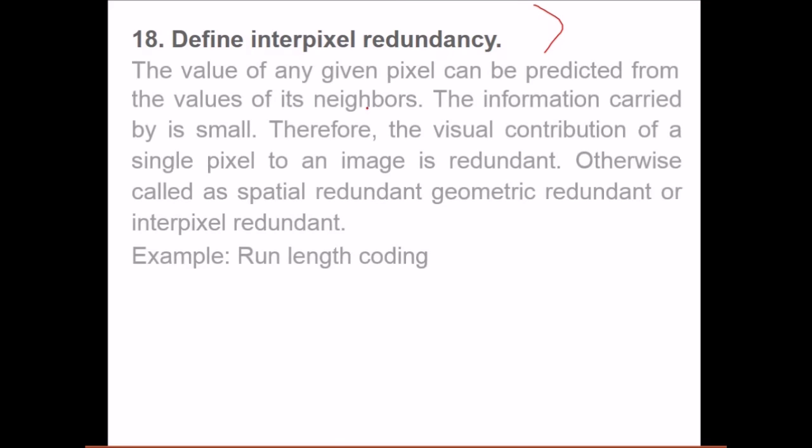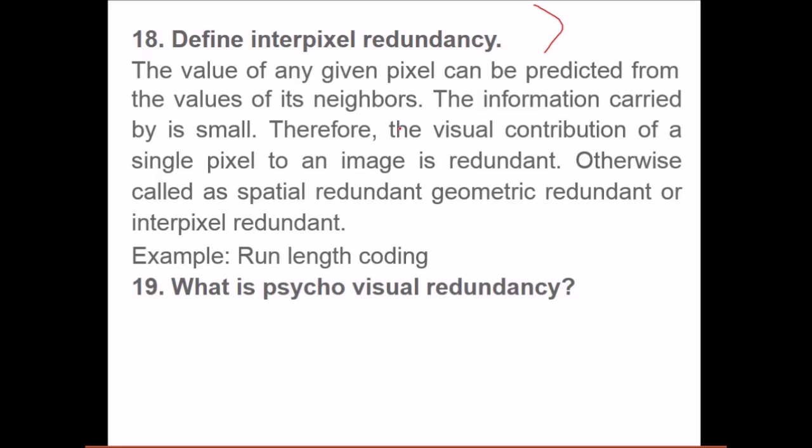Define inter-pixel redundancy. The value of any given pixel can be predicted from the value of its neighbors. Any pixel from neighbor, you can replicate it, you can average it or whatever. Neighbors have similar, somewhat similar values. So the information carried is small. Therefore, the visual contribution of a single pixel to an image is redundant, otherwise called as spatial redundant, geometric redundant, or inter-pixel redundancy, like run-length encoding.